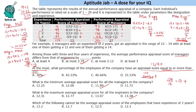Which of the following cannot be the average appraisal score of employees with 2 years of experience? We have to deal with these people and find the minimum and maximum. For engineers with 2 years: minimum is 4 into 10 = 40 plus 3 = 43; maximum we already found. So engineers range from 43 to 49.